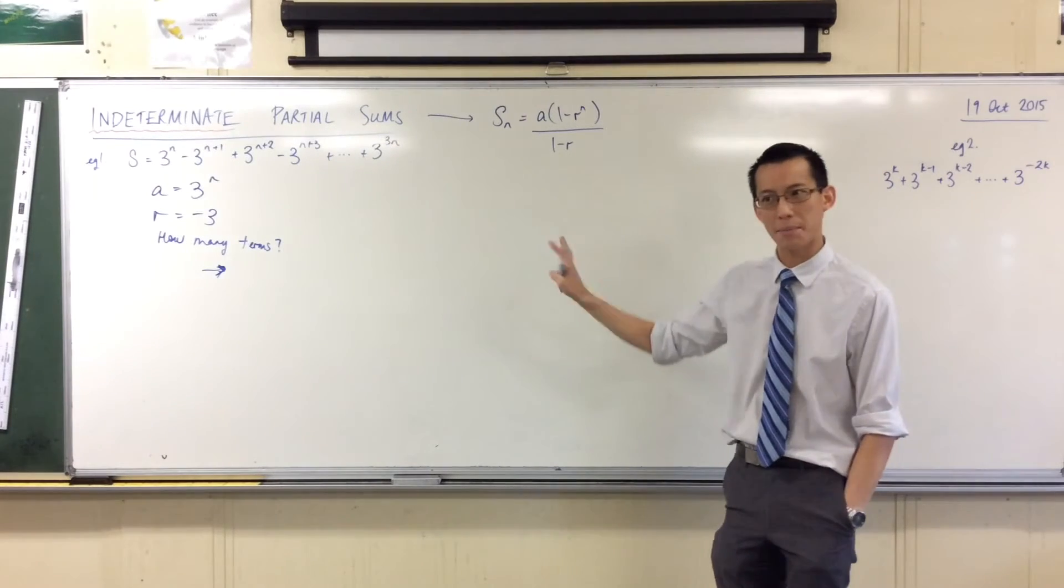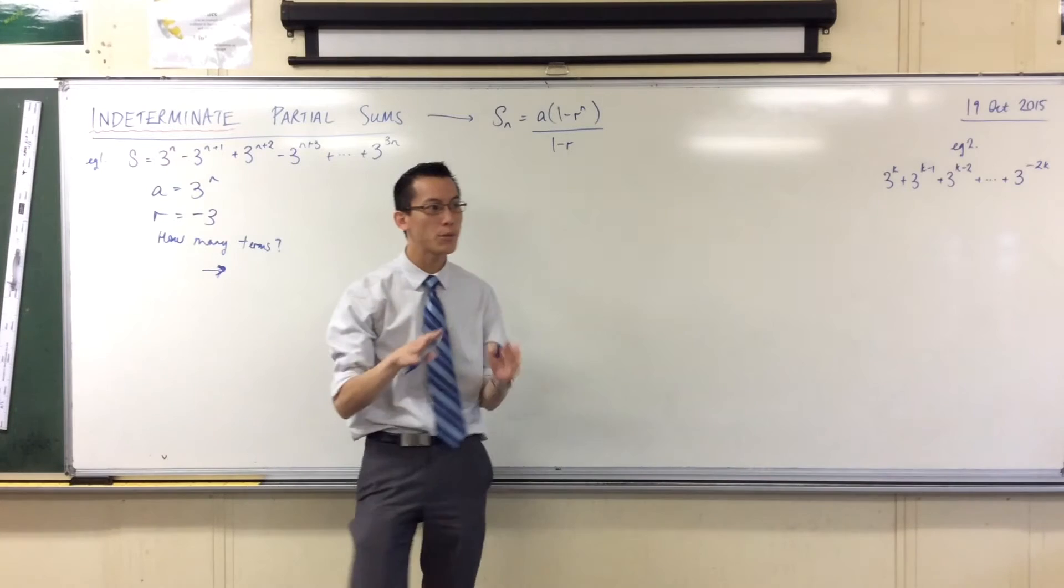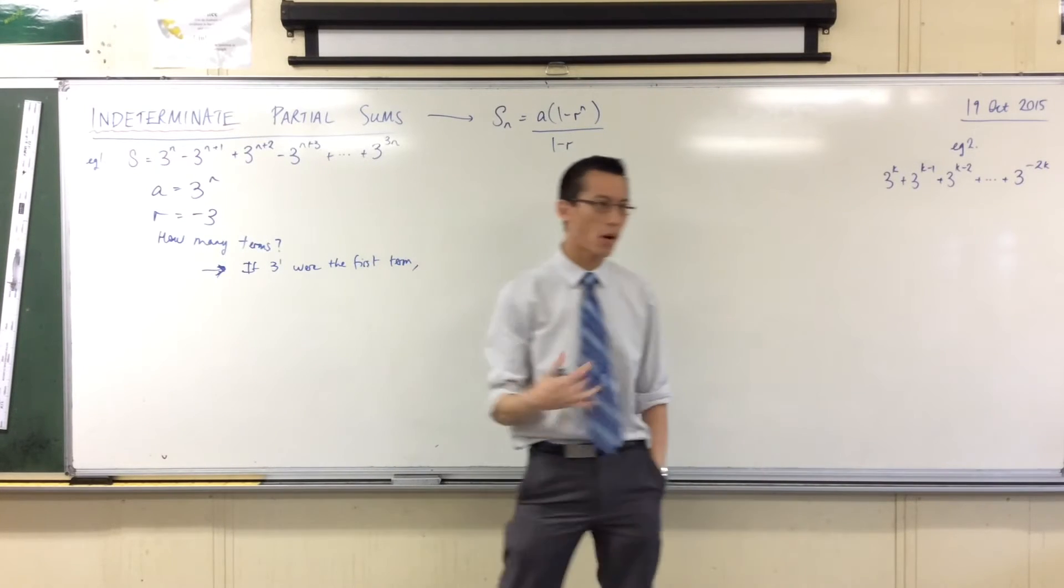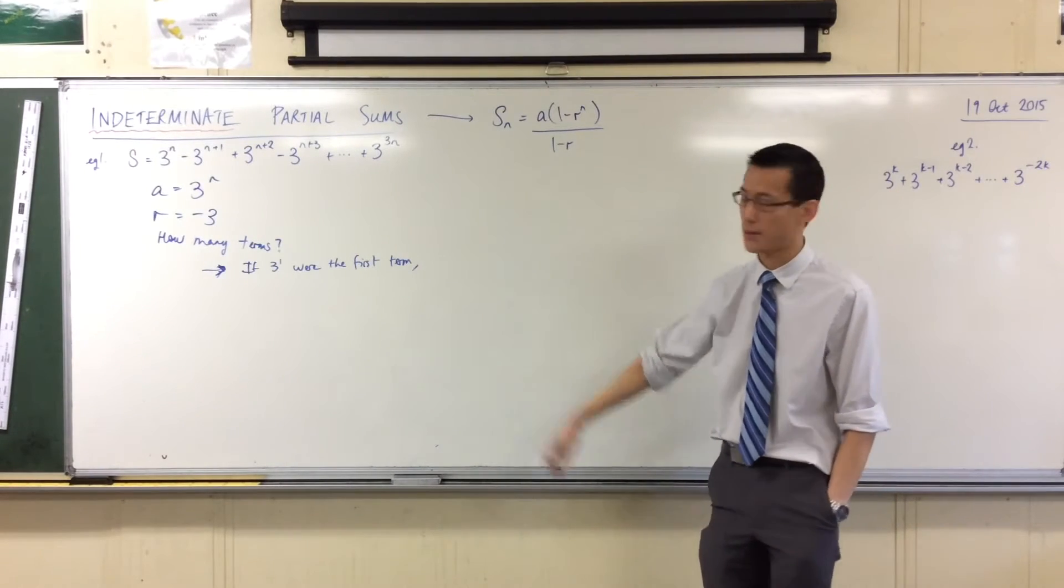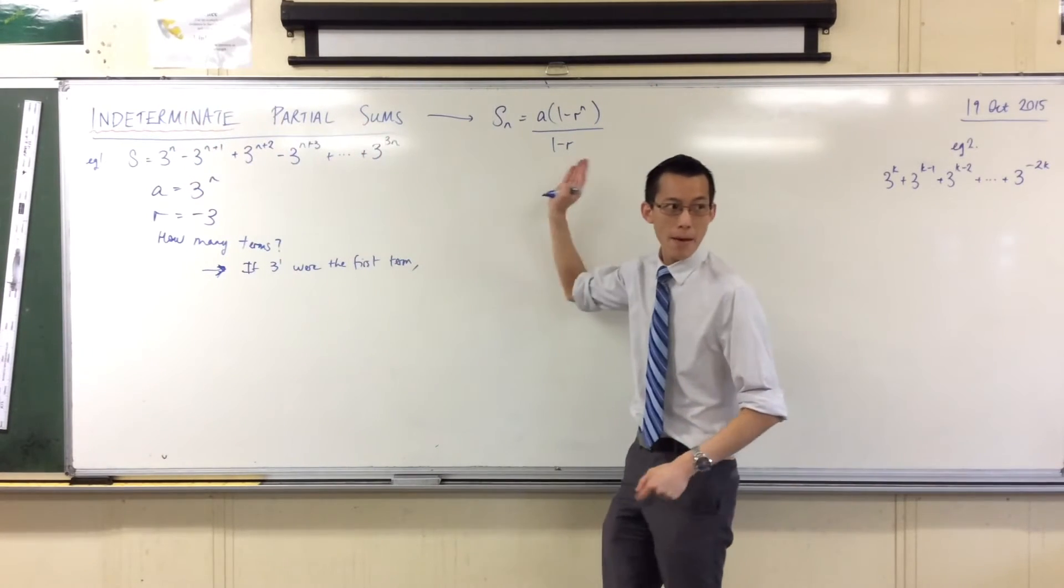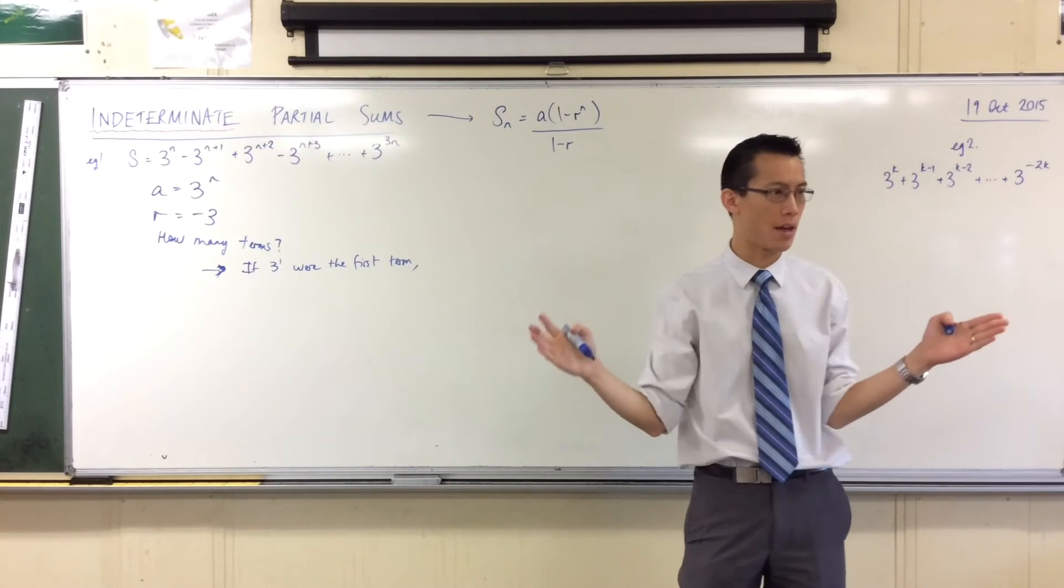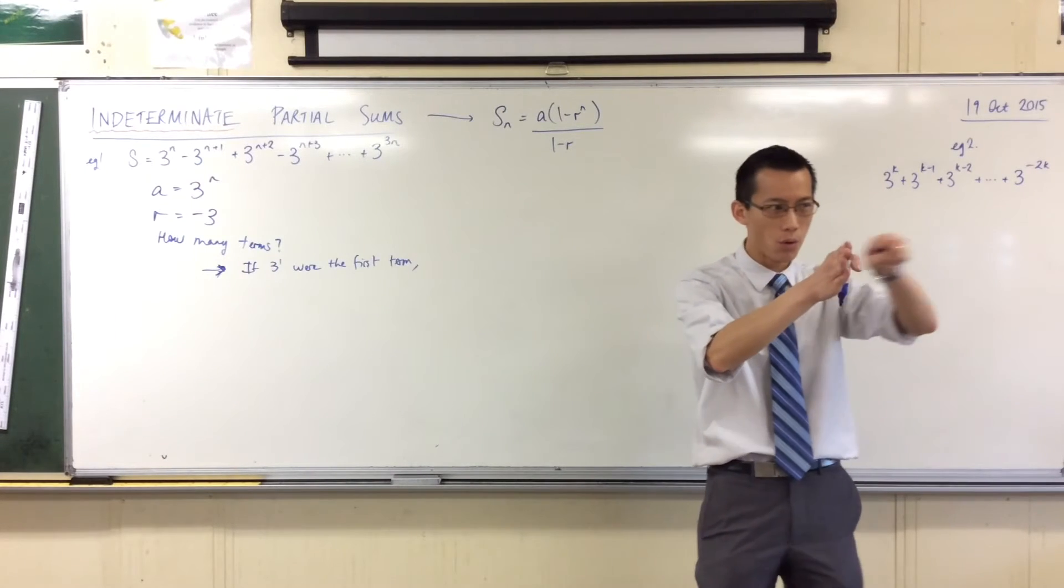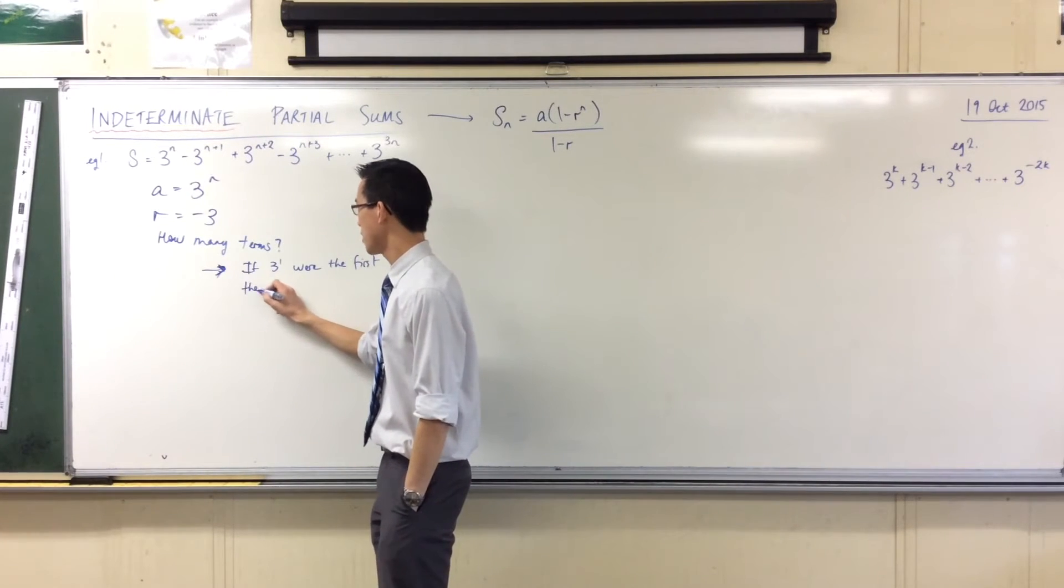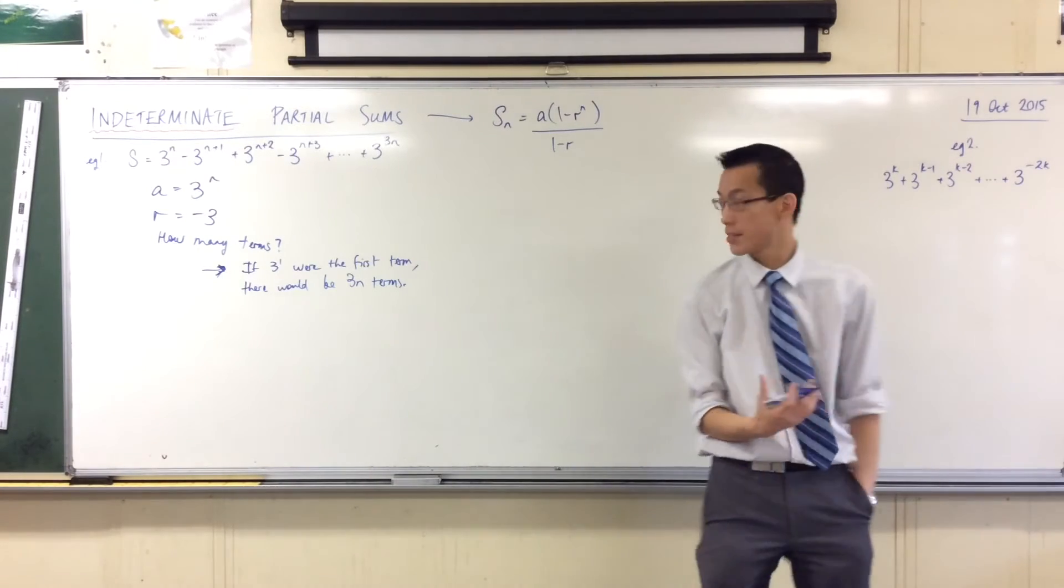Now, this question is hard, but an easier question, which I could compare this to is, if I started at 3 to the power of 1, if 3 to the 1 were the first term, and it's worth thinking of this as an analogue, because it usually is, 3 to the power of 1 usually is the first term. Then how many terms would there be in total? There'd be 3 to the 1, 2, 3, 4, 5, all the way up, and it would finish on 3m. So if I had that whole series, how many terms are there? There would be 1, 2, 3, 4, 5, 6, all the way up to 3m. There would be 3m terms. Does that make sense? So if 3 to the 1 were the first term, there would be 3m terms.